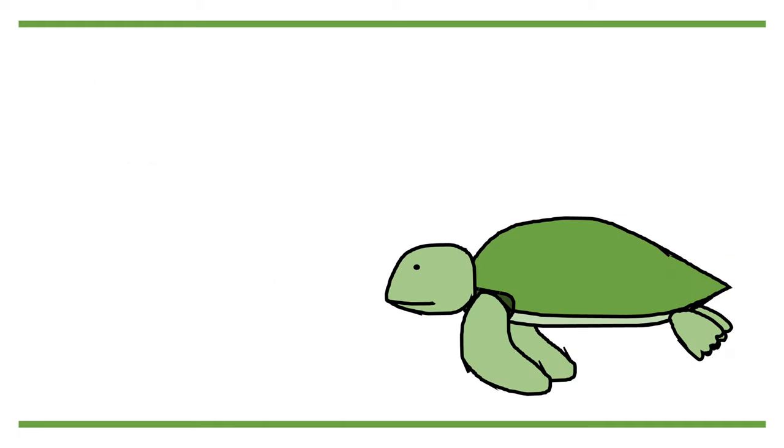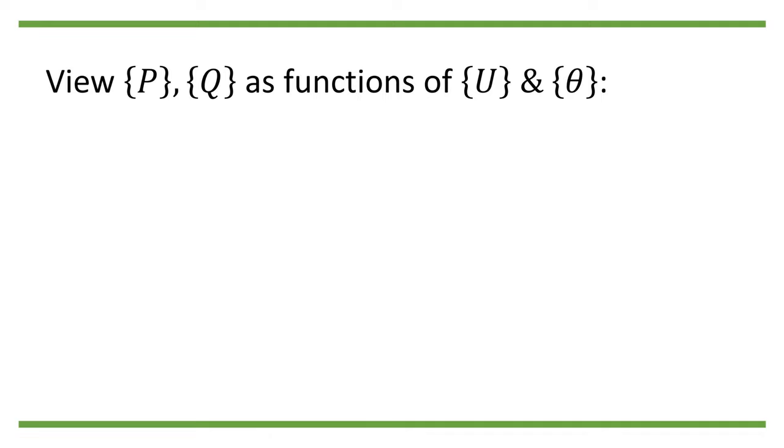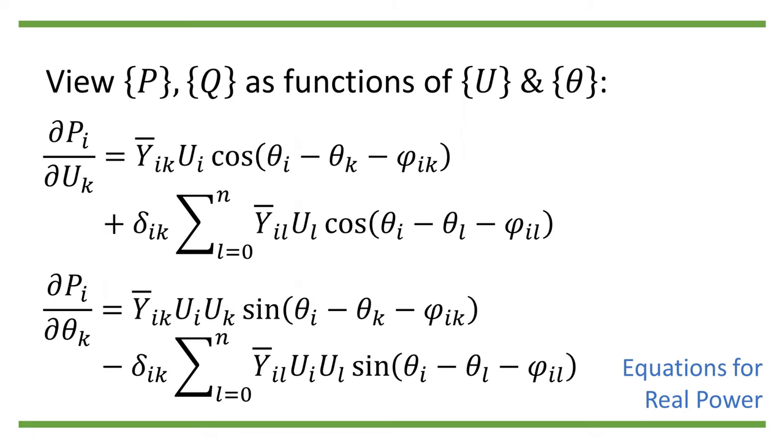To calculate the Jacobian matrix, let us view the real and reactive power as functions of voltage magnitude and phase angle and take the partial derivatives of them according to the summation form of the power flow equation. We can therefore obtain the following equations for the partial derivatives. Here, the Kronecker delta indicates the Kronecker delta function.